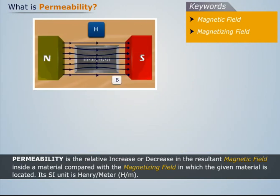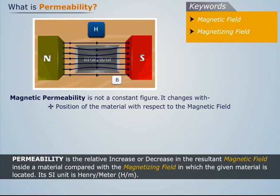We need to remember that magnetic permeability is not a constant figure. It changes with the position of the material with respect to the magnetic field, frequency of the field, temperature, and various other factors.